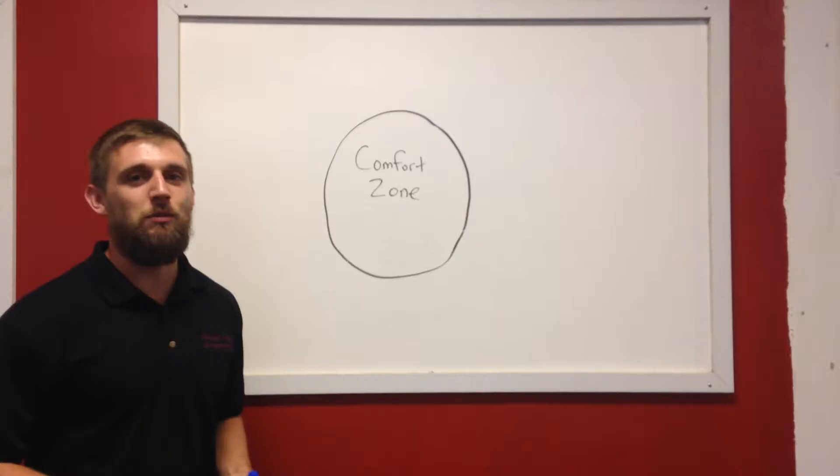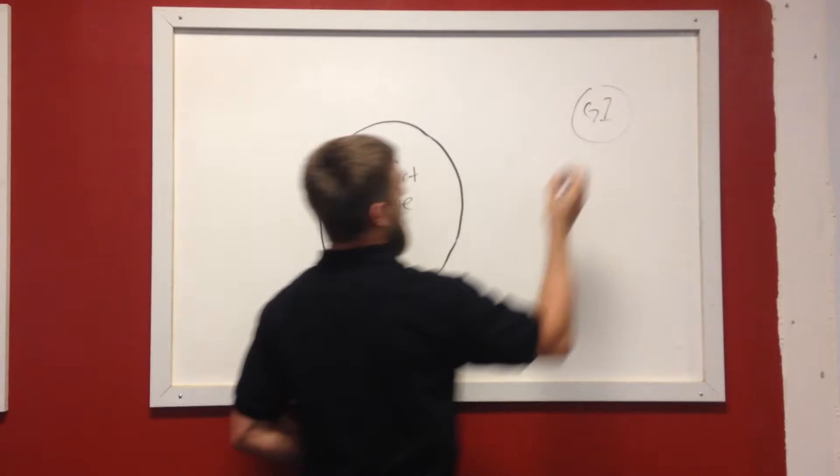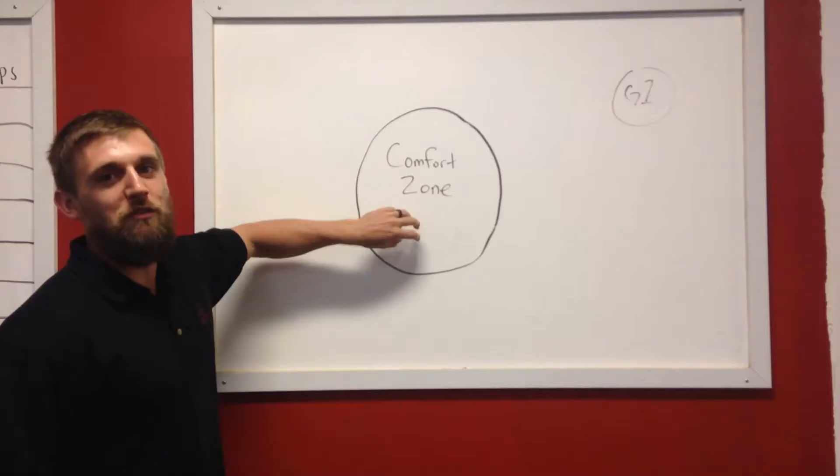So let's go ahead and assume that you have some goals that you want to achieve. So we're going to write goal one over here. So like I said, all goals worthwhile achieving are never found inside here. So that's why we have goal one here.